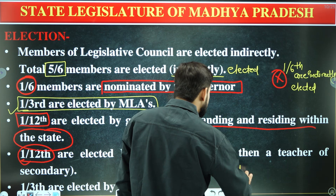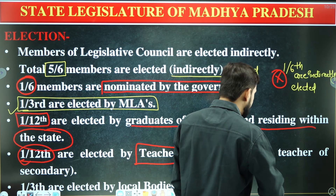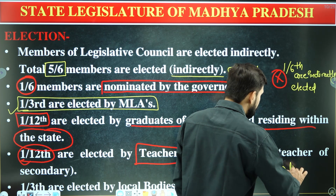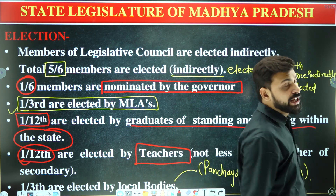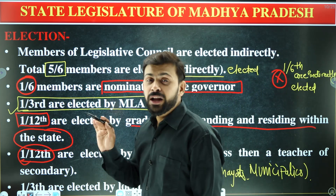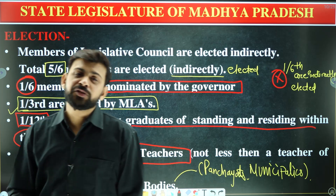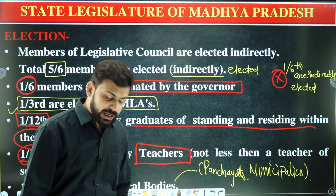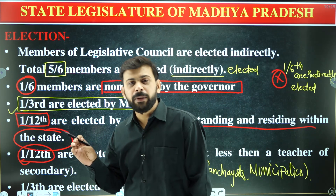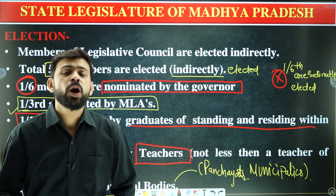To repeat: members are elected from panchayats and municipalities. One-sixth are nominated by the Governor. One-third are elected by the Members of Legislative Assembly.